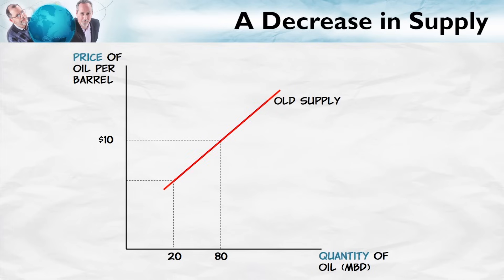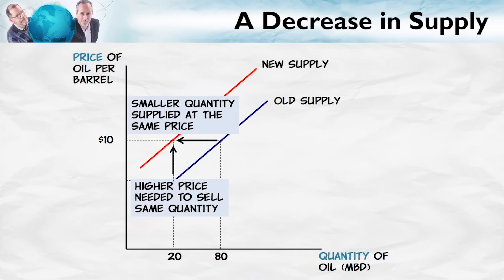What about a decrease in supply? That is just moving the supply curve in the opposite direction — to the left and up. With a decrease in supply, suppliers at the same price are now willing to sell a smaller quantity than before. It also means that at the same quantity, suppliers now require a higher price to sell that quantity. What would make suppliers require a higher price to sell the same quantity? An increase in costs.